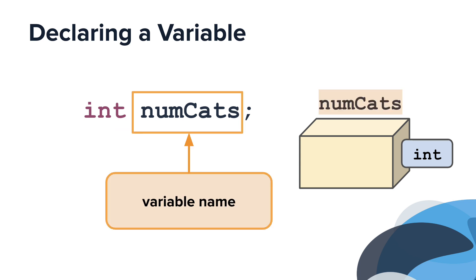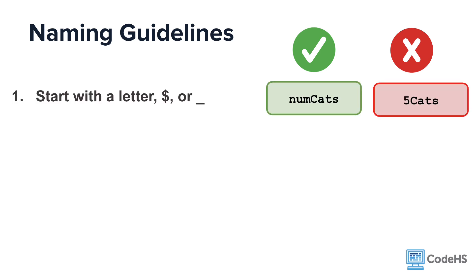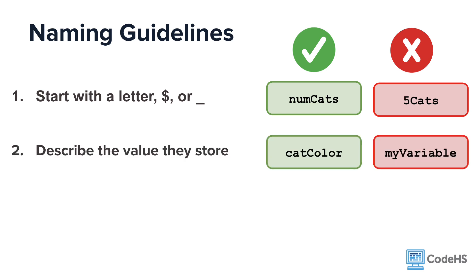After the data type, you write the variable name. Choosing the right variable name is important. Let's look at some naming guidelines. When writing variable names, it's important to follow appropriate naming conventions. Variables must start with a letter, dollar sign, or underscore. If variables are named starting with a number, it will cause the program to throw an error. Variable names should describe the value that they store. Programs will typically have many variables, so a descriptive name makes it easy to keep track of what each variable stores.